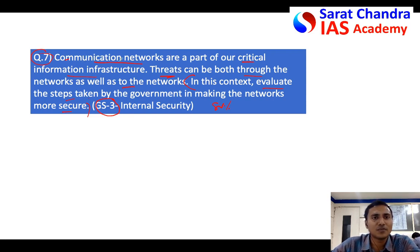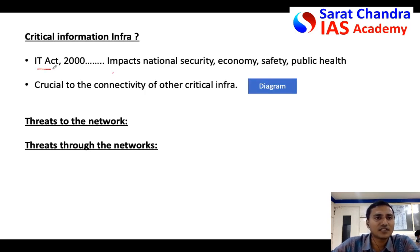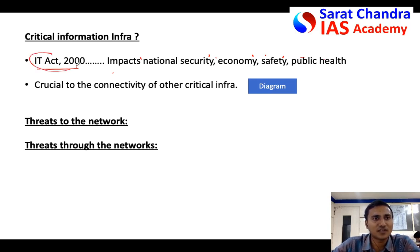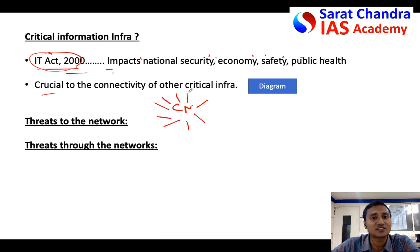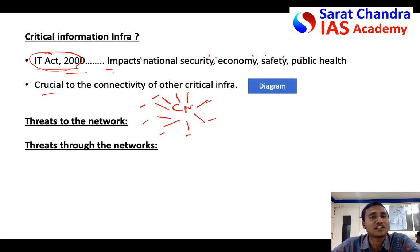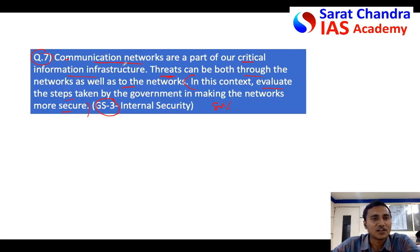To justify the first statement — that communication networks are part of critical information infrastructure — you can cite the Information Technology Act 2000, which clearly mentions that any threat to the communication network will impact not only national security but also the economy, public safety, and public health. Furthermore, communication networks are connected to several other critical infrastructure: aviation, shipping, railways, oil and gas, nuclear, banking, and intelligence organizations — so any effect on communication networks affects all of these.